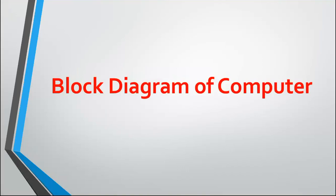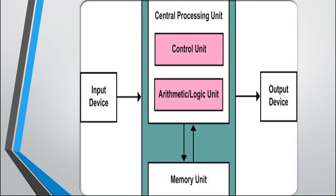Today our content is the block diagram of a computer. The main units of the block diagram are: first, the input device; second, the central processing unit, which contains the control unit and the arithmetic and logic unit; third, the memory unit; and fourth, the output devices. Let's see the working of each and every unit.